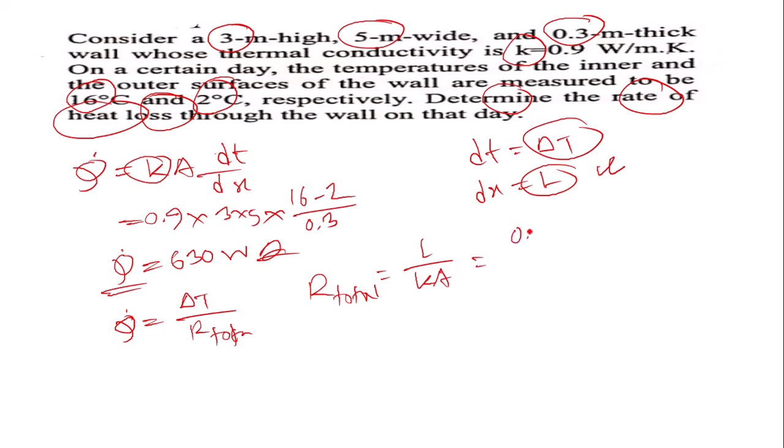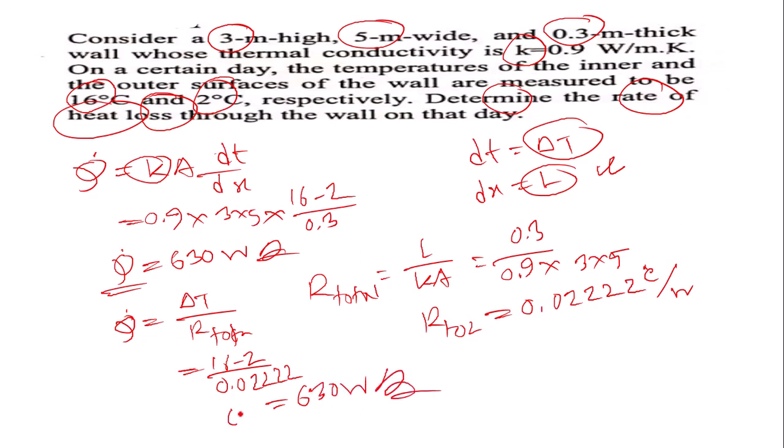R total is 0.0222 degrees Celsius per watt. After putting this value, 16 minus 2 divided by 0.0222, we get 630 watts. The answer, the heat rate.